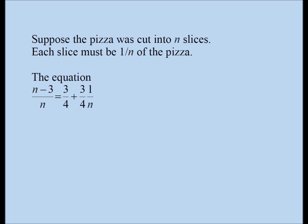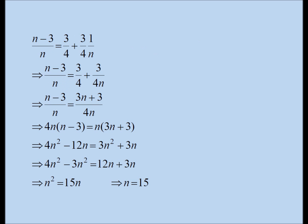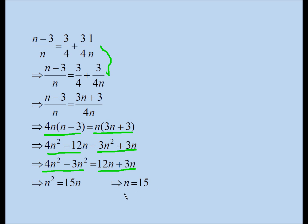I'm going to solve this equation on the next slide. Here is the solution to the equation. Three times one is equal to three, four times n is equal to four n — that's the only modification made. Now if you add the right-hand side fractions, you get three n plus three over four n. If you cross multiply, you get four n times (n minus 3) equals n times (3n plus 3). Distribute: four n squared minus twelve n on the left-hand side, three n squared plus three n on the right-hand side. Move the n-squared terms to one side and the n terms to the other, and you get n squared equals fifteen n. Divide both sides by n and you get n equals fifteen.